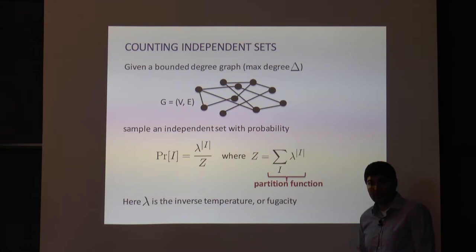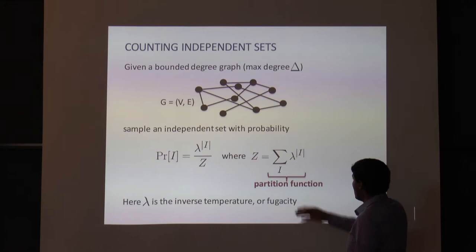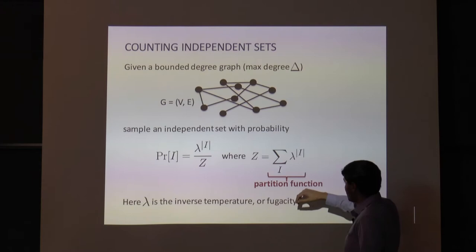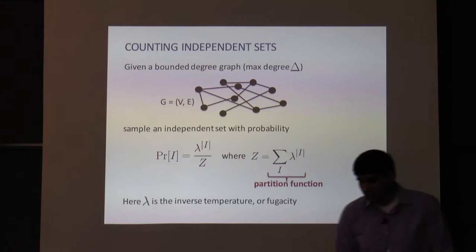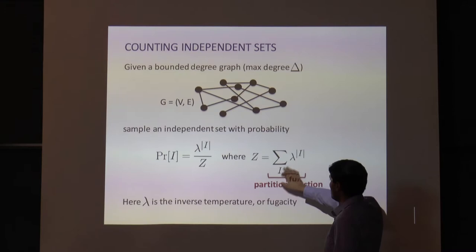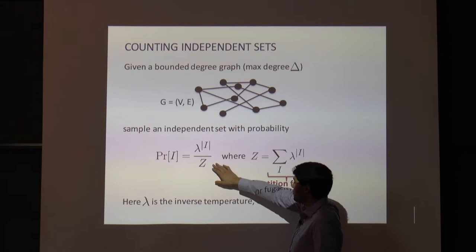Lambda is usually called the inverse temperature or the fugacity. As lambda gets larger, the temperature goes down, isolating you more and more to the large independent sets. As lambda gets smaller, the problem becomes easier because you get closer to being uniform. We care about either the counting version — approximating the partition function Z, the sum over all independent sets of lambda to the size — or the approximate sampling version, sampling from a distribution close to this distribution on independent sets.